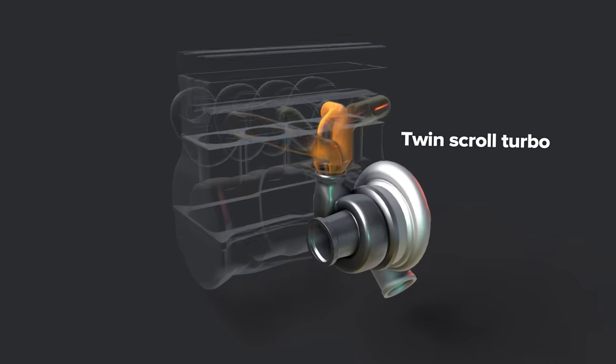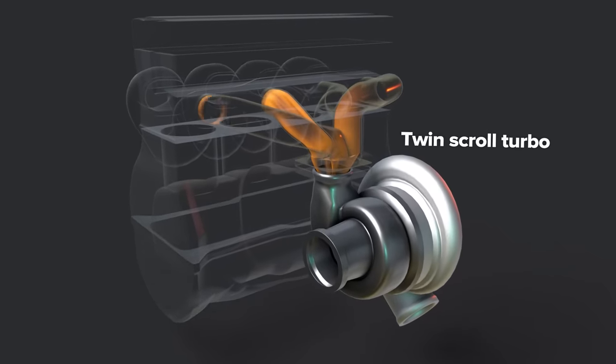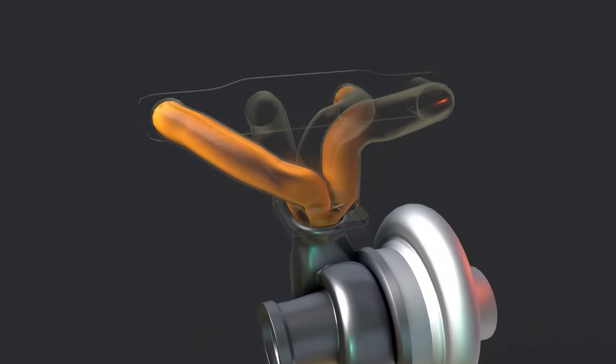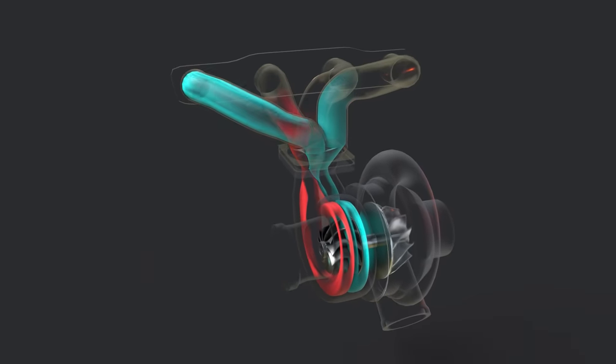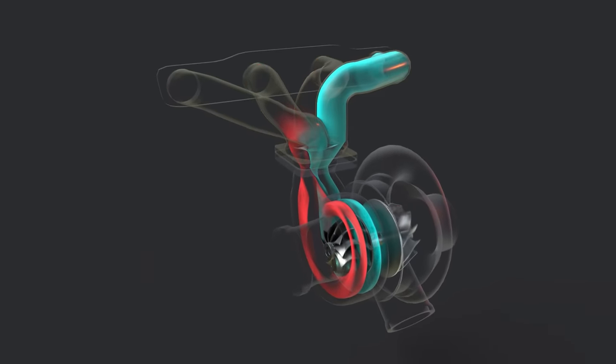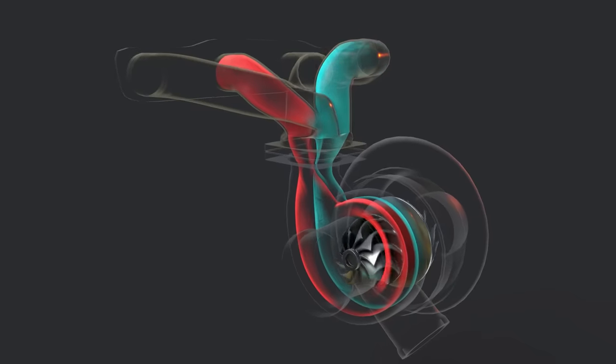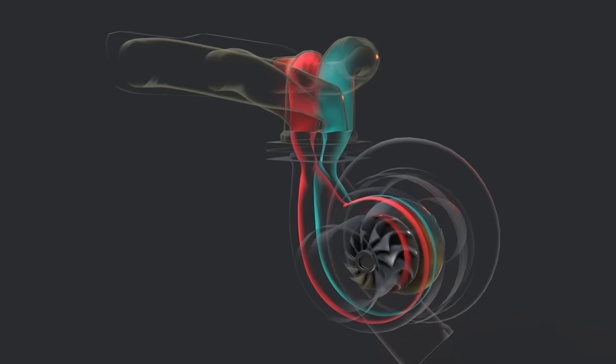Twin scroll turbo: Exhaust exits the cylinder in a pulse with a high pressure section followed by low pressure. Twin scroll turbos separate cylinders into pairs so that exhaust pulse waves do not interfere with each other, and a continuous stream of maximum pressure exhaust reaches the turbine.